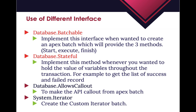To track record counts using database.stateful, we create three variables: one for total records, one for success, and one for failed. Inside the execute method, we get the total records from the scope size. For failed records, we can use the database class methods - database.update, delete, insert, or upsert - which return database.SaveResult, DeleteResult, or UpsertResult respectively, allowing us to identify success and error records.